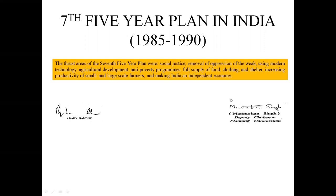During this plan, the basic or ultimate goal was to generate inclusiveness in the Indian economy. However, the word 'inclusiveness' was not directly documented, but from different areas of importance we came to know that inclusiveness was one of the hidden agendas of the Seventh Five-Year Plan. The Prime Minister of India at the time was Rajiv Gandhi and the Deputy Chairman of the Planning Commission was Manmohan Singh.